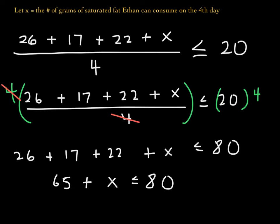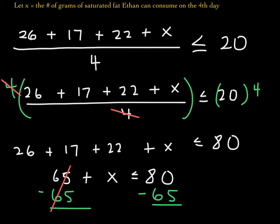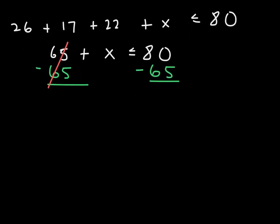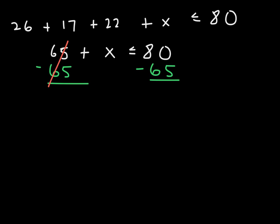Let's subtract 65 from both sides to isolate the variable X. Now you have no more constants on the left. So X — the number of grams of saturated fat he can have on the fourth day — is less than or equal to 15.